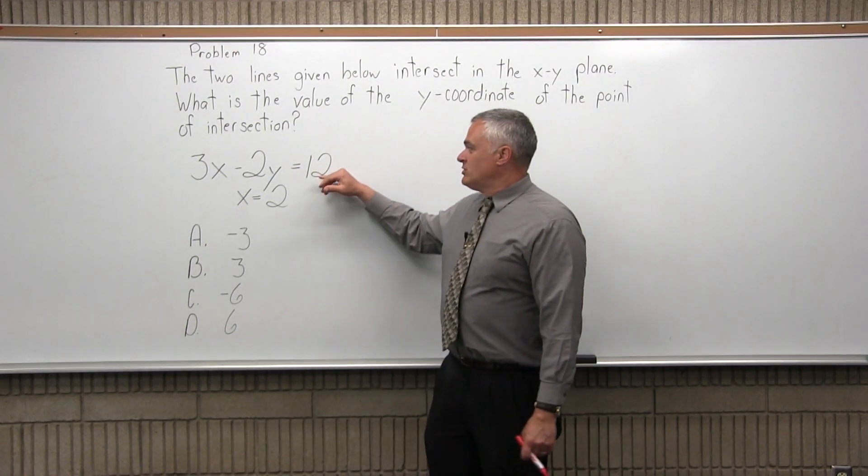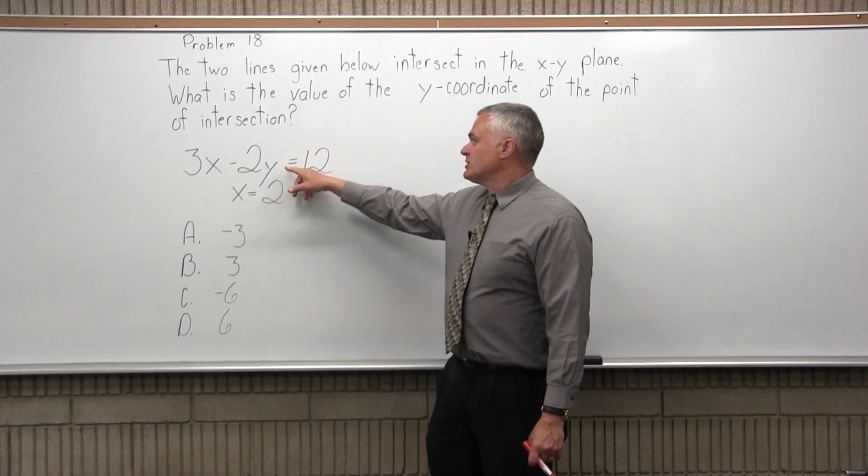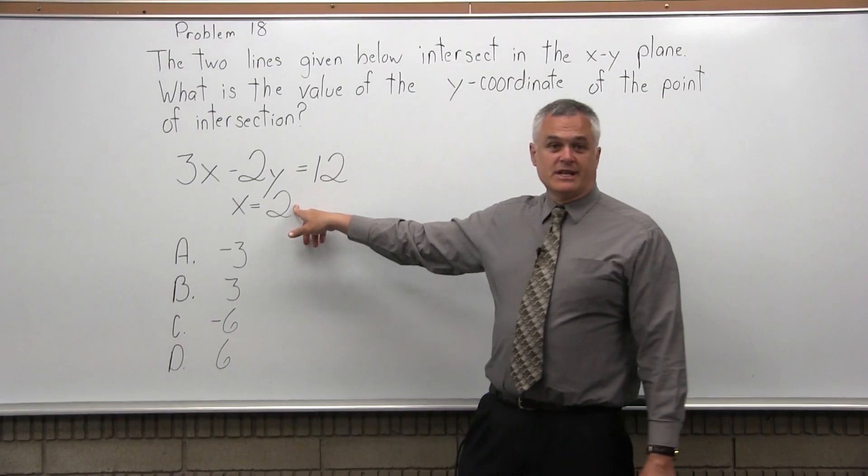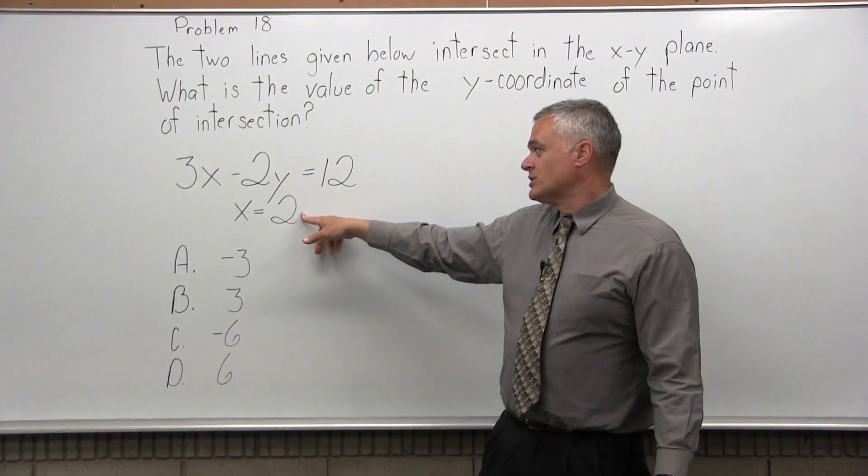So we have two lines. One line is 3x minus 2y equals 12. That's a line. You could draw the graph. The other line is x equals 2. That's also a line.